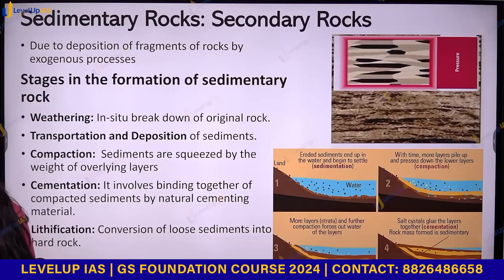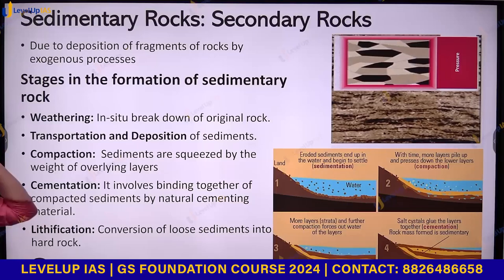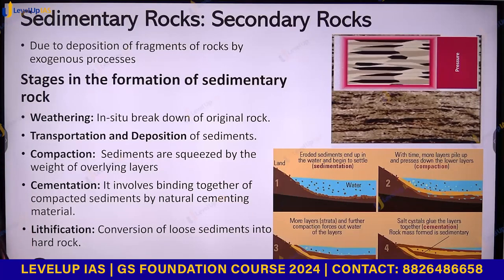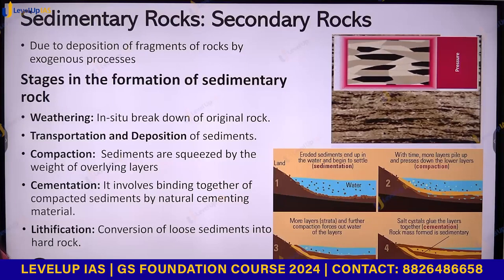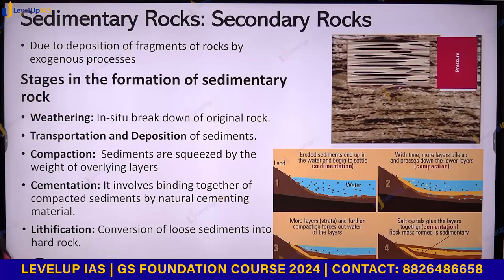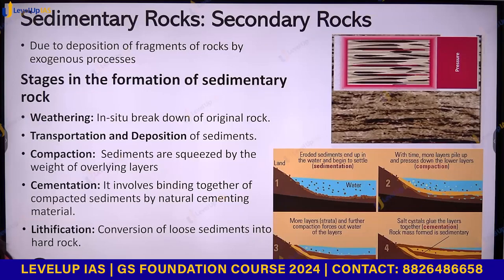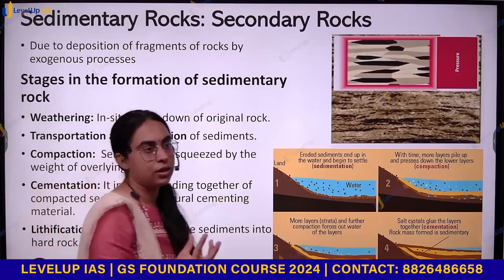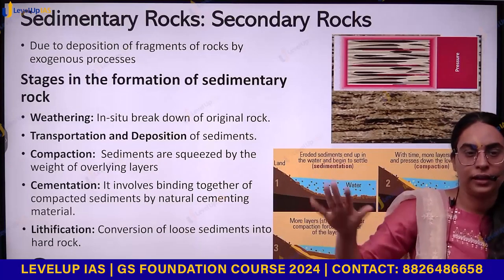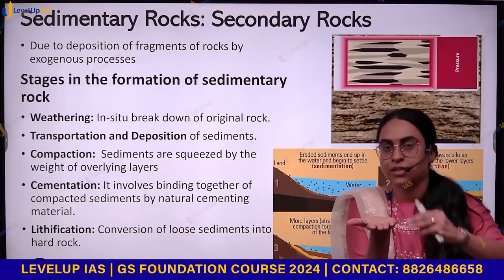Sedimentary rocks are formed because of the deposition of fragments of rocks by exogenous processes. Exogenic agents — a river, a glacier, desert winds — can erode the rock, reduce it to fragments, and form the sediments.